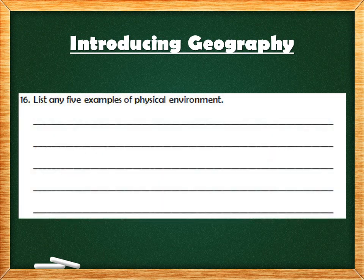The last question is: list any five examples of physical environment. I'm giving you two hints — the first one is land and the second is air. You need to write three more. After writing them, take a picture of that question and send it to me on mail in ClassEra.